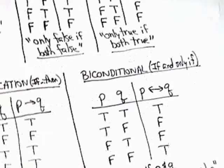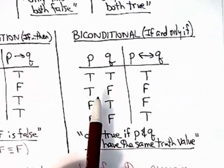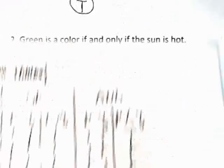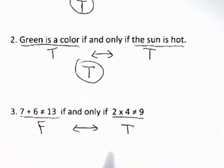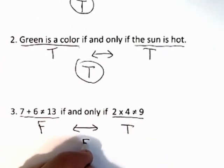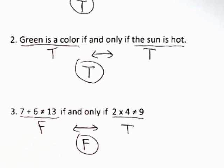And again, the biconditional: if the two things don't match you get a false. And here they don't match, so the biconditional itself is false.